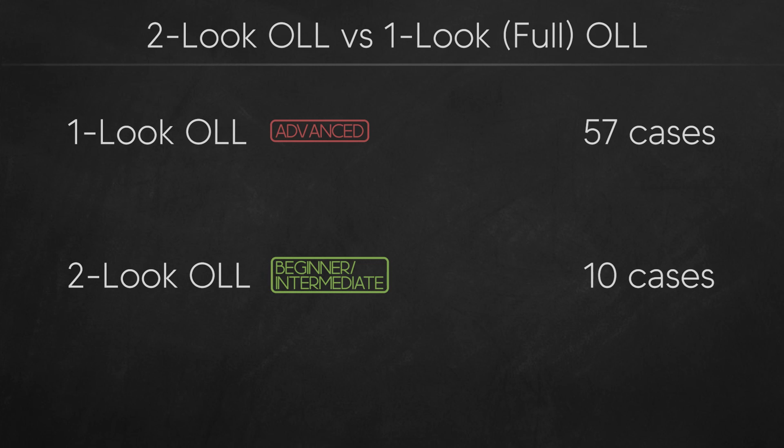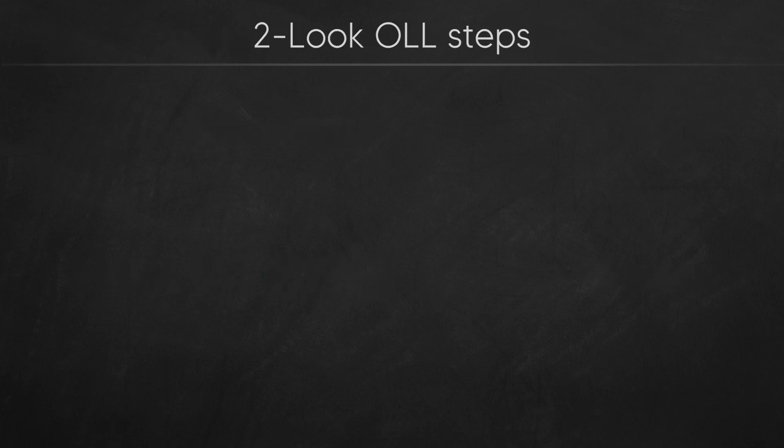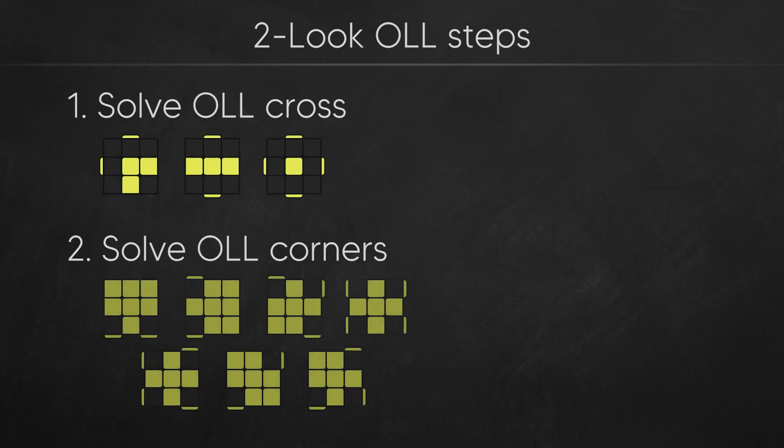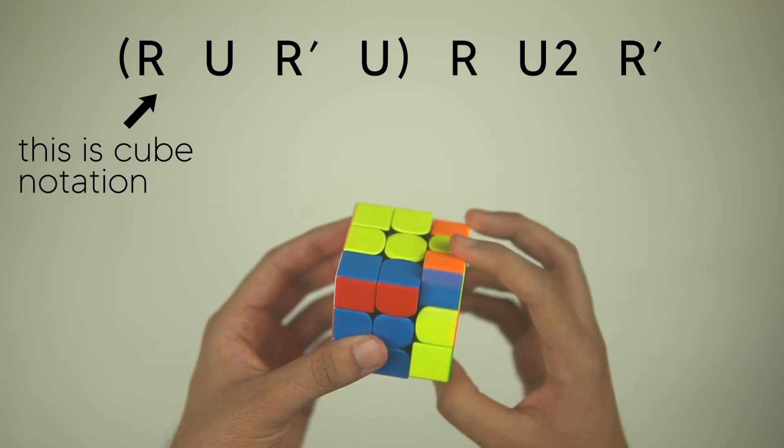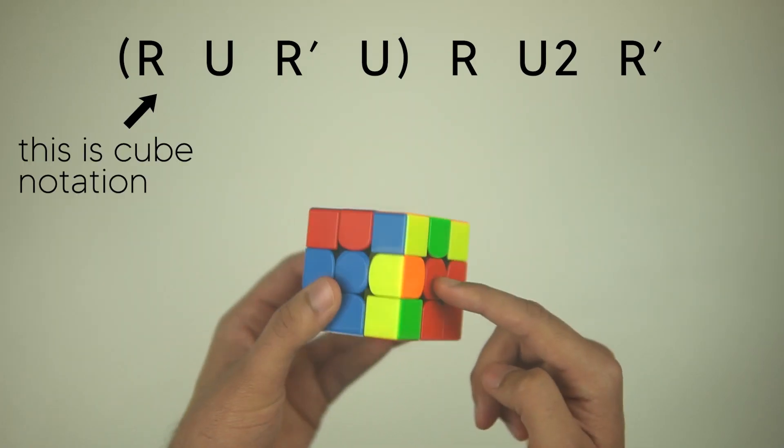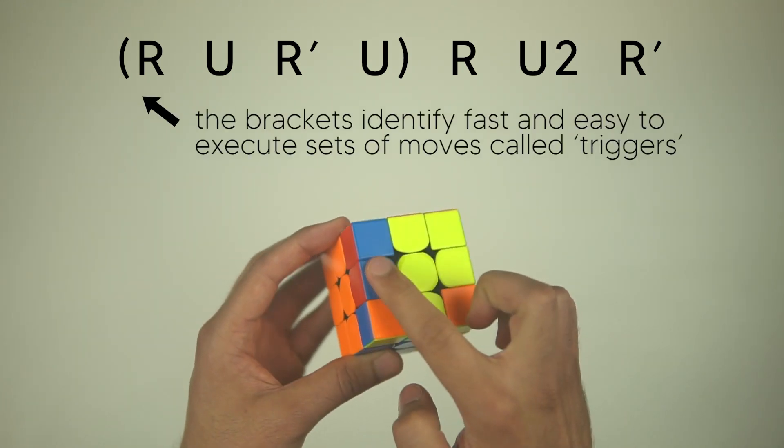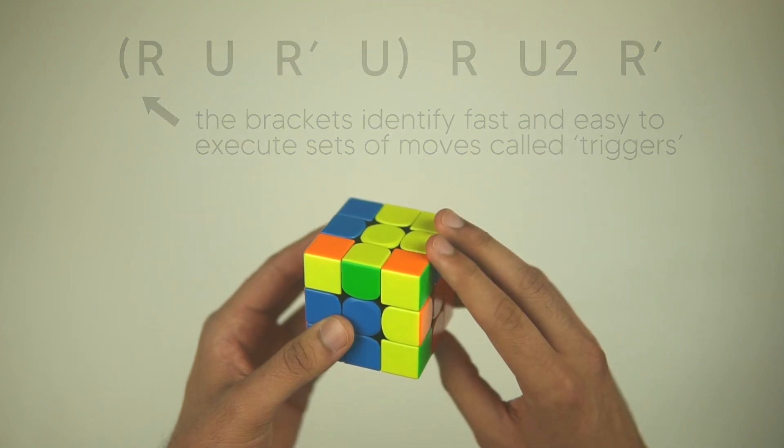The reason it's called two-look is because we break normal one-look down into these two steps. First, we start by solving the cross, which has three cases, and then we solve the corners, for which there are seven different cases we need to learn. Now let me show you the algorithms to solve these 10 cases. If you're confused about cube notation and how to actually perform an algorithm, check out the video I've linked in the description below to learn it, otherwise you can just follow along with the movements I show you in this video.